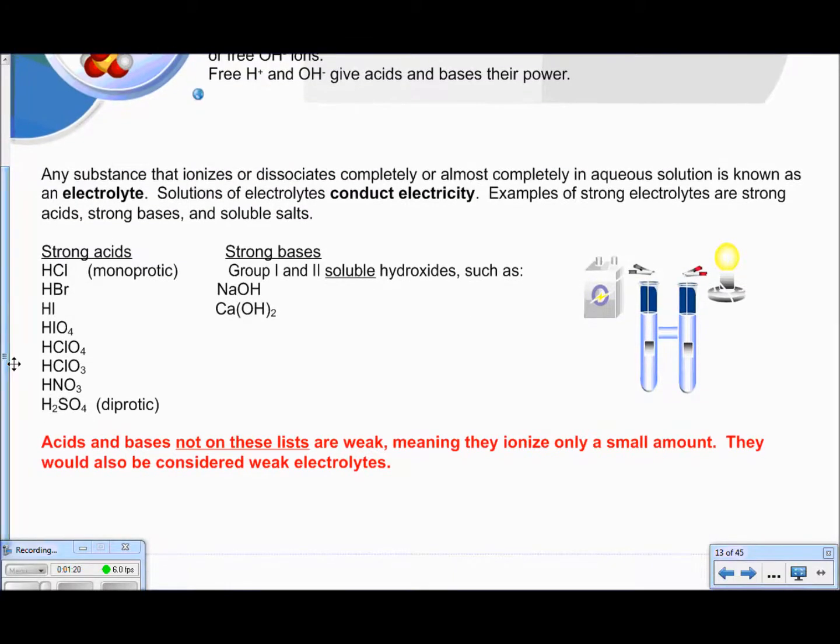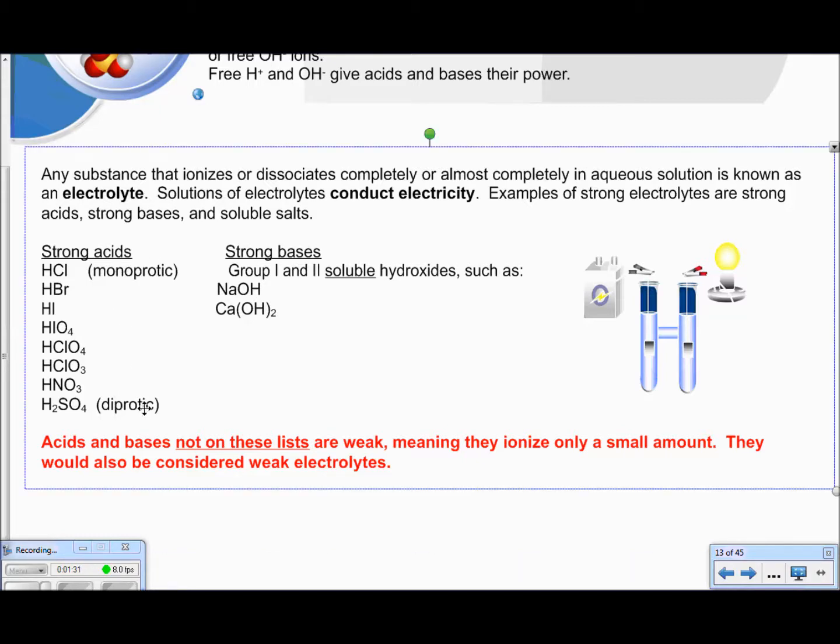Here is the list of strong acids and strong bases. Yes, these need to be memorized. Make sure you know these. Notice I have the word monoprotic written here and diprotic written here. All that means is it's giving away one hydrogen or two hydrogens. Di for two, mono for one. So here are our strong acids. Here are our strong bases. Acids and bases not on these lists are weak, meaning they ionize only a small amount. They will also be considered weak electrolytes.